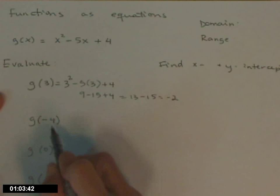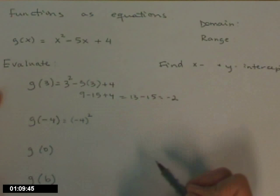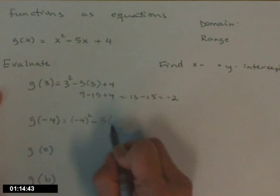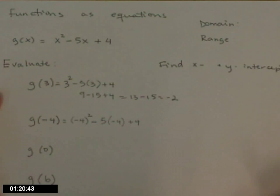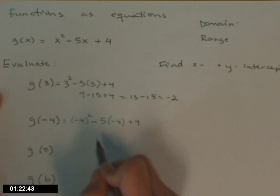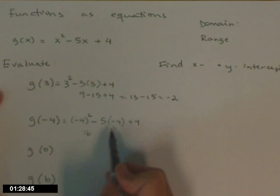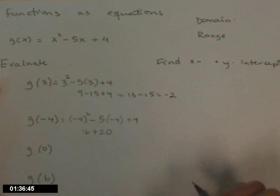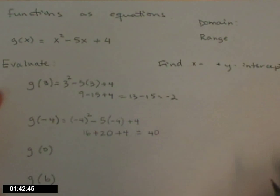g of negative 4 — same thing, except now I'm going to replace the x with negative 4. And I'm going to be careful with parentheses, especially when evaluating at negative numbers: negative 4 squared, minus 5 times negative 4, plus 4. Negative 4 squared — the entire number gets squared — gives positive 16. Then 5 times negative 4 is negative 20, and minus negative 20 becomes plus 20. Plus 4, so altogether the answer is 40.